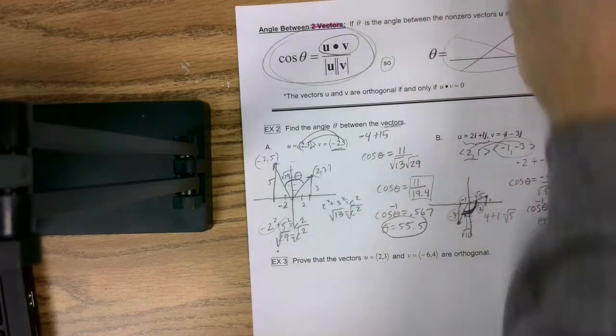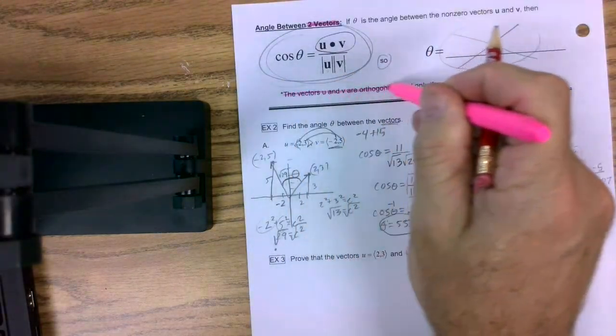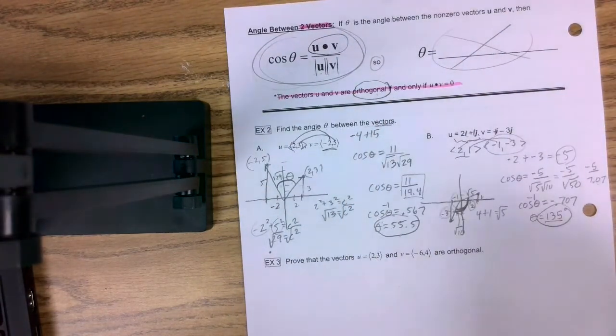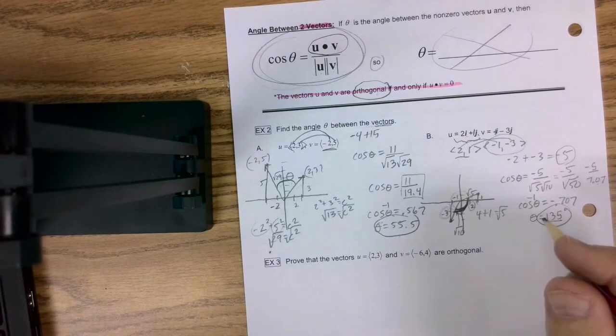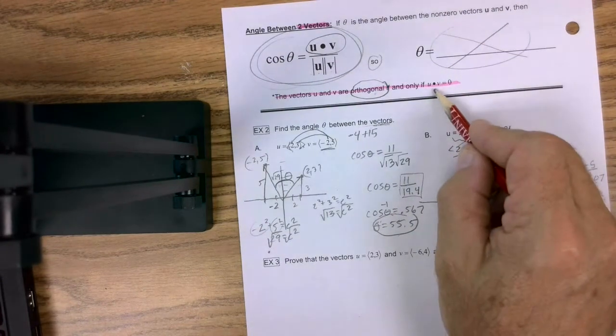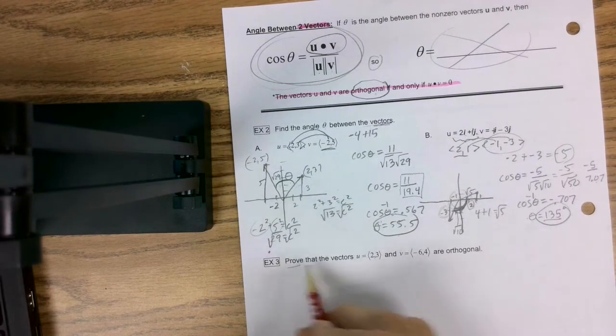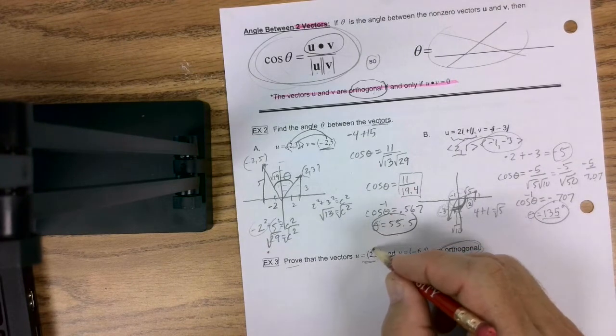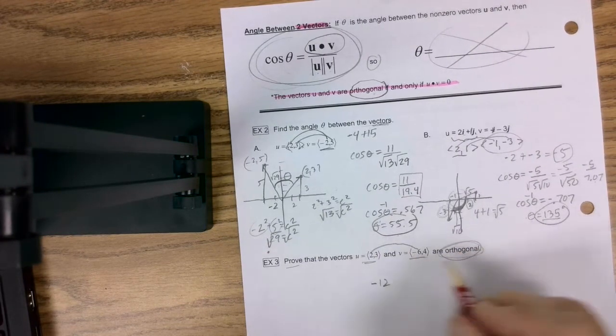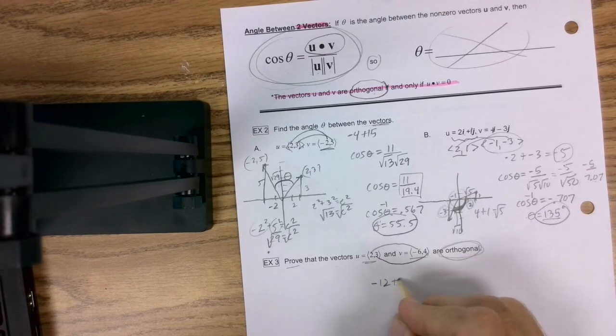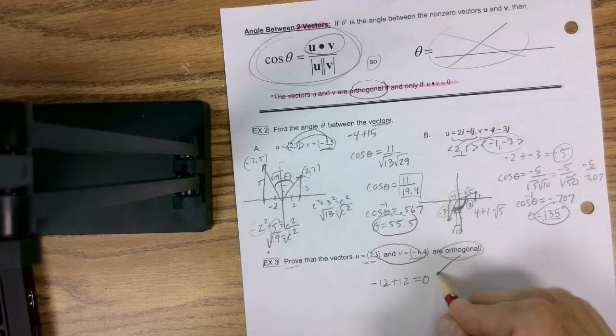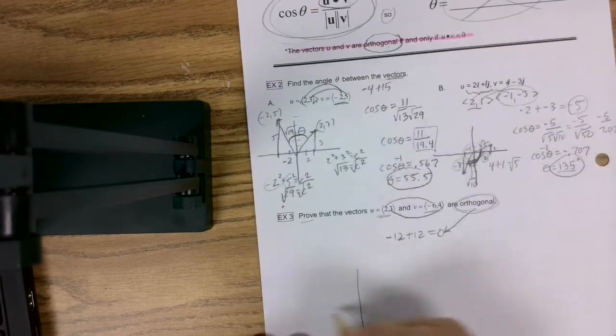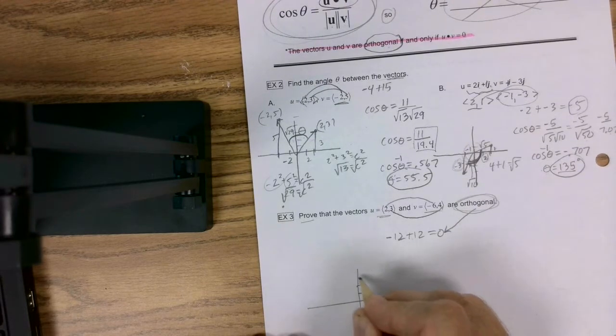Now I didn't bring your attention to this, but it says the vectors u and v are orthogonal. What in the world? That's a fancy word. If the dot product is 0, well, it says prove that this and this are orthogonal. Well, that just means mess around with the dot product. So 2 times negative 6 is negative 12. 3 times 4 is 12. And we get 0, and we say yay, it's orthogonal. But that's no fun. Let's take a little deeper dive.